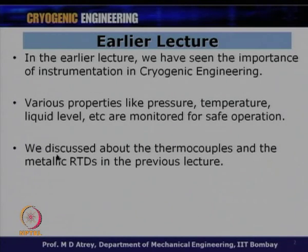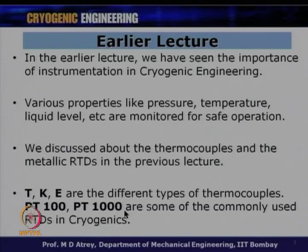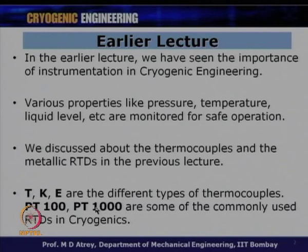We started with temperature measurement and are still continuing with it. We discussed thermocouples and metallic RTD resistance temperature sensors in the previous lecture. T type, K type, and E type are the different types of thermocouples normally used. We also talked about platinum RTDs — PT100 and PT1000 — where 100 and 1000 are the resistances of the sensor at 0 degrees centigrade.